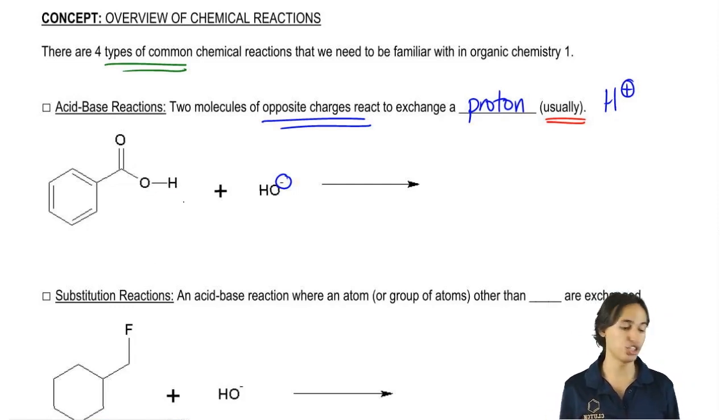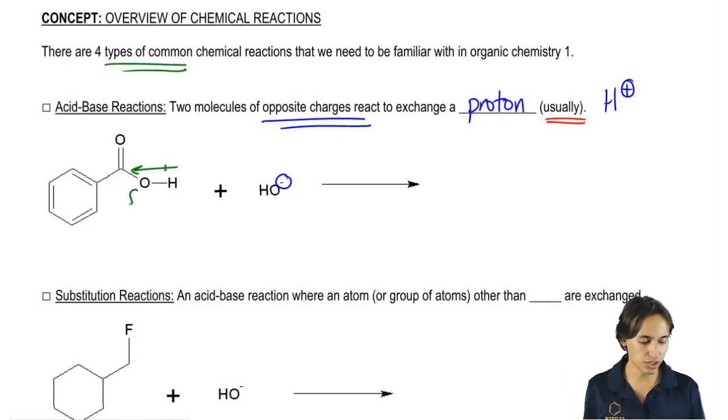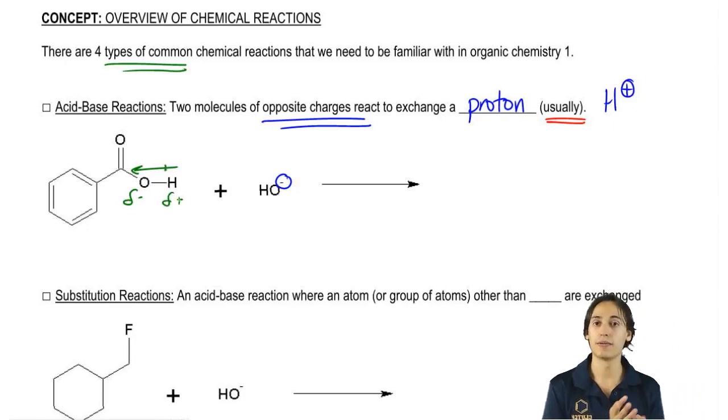And the answer is yes. There's actually a very strong dipole pulling towards the oxygen. So what that means is that more electrons are at the oxygen and less electrons are at the hydrogen. Are you guys comfortable with that?